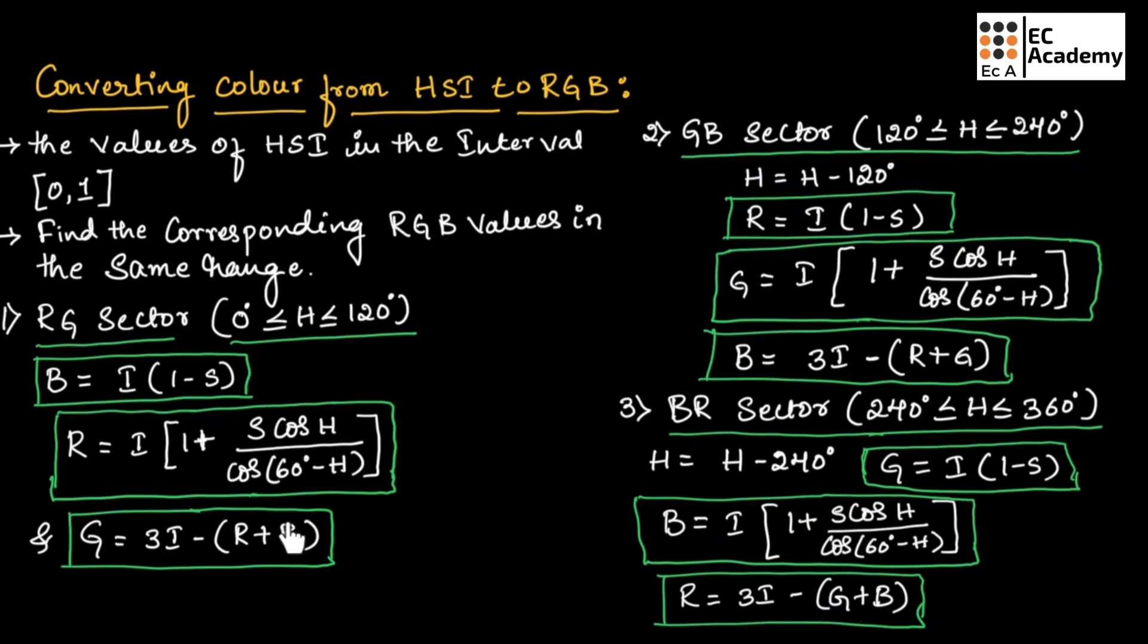If you observe here, all the three formulas are same. Only the RGB value will change. In the first sector, first we need to take B, then R, then G. And in the second sector, we need to take R, G and B. And in the third sector, we need to take G, B and R. The formulas will be similar. Only difference is, in the last formula, if we are taking G, we need to take R plus B here. If we are taking B, we need to take R plus G. And if we are taking R, we need to take G plus B in the formula.